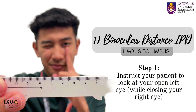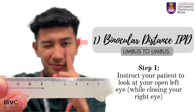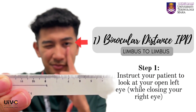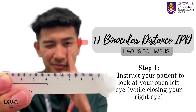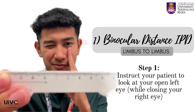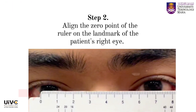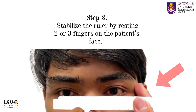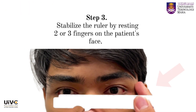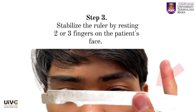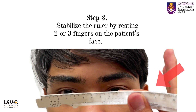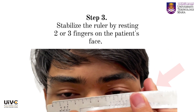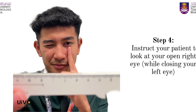Instruct the patient to look at your open left eye, then close your right eye. Align the zero point of the ruler on a landmark of the patient's right eye. Stabilize the ruler by resting two or three fingers on the patient's face.